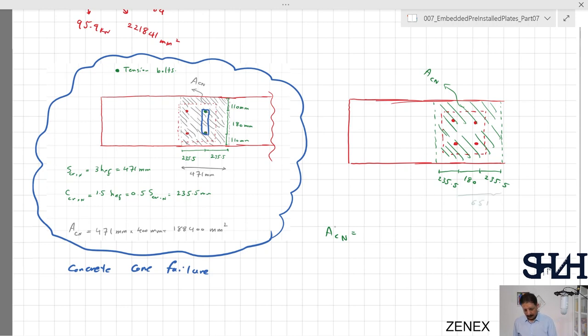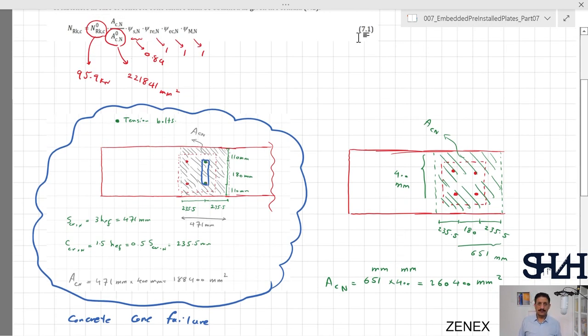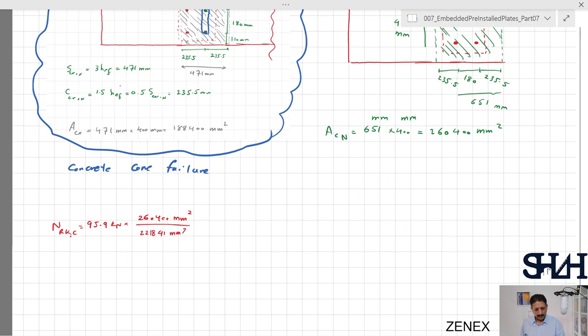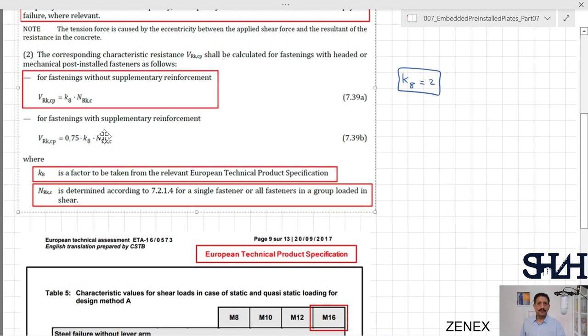This is A_c,N for this clarification: 235.5 plus 235.5 plus 180 which is 651, and the other one is 400 times 400 millimeter, so 260,400 square millimeters. We substitute this value to equation 7.1 to determine N_Rk,c: 95.9 kilonewtons times 260,400 divided by 22,1841 times 0.84, which is 94.6 kilonewtons.